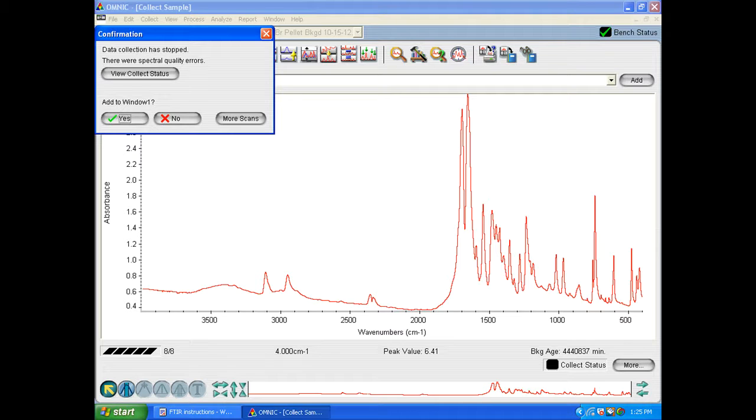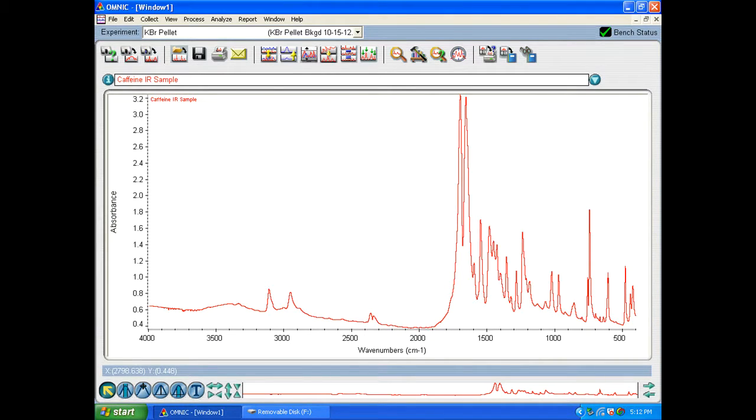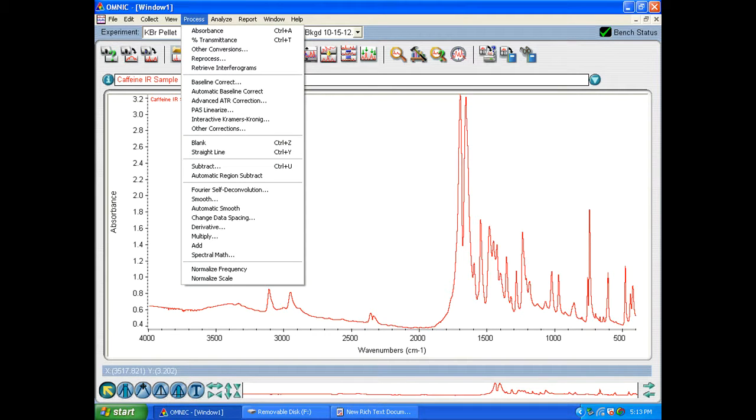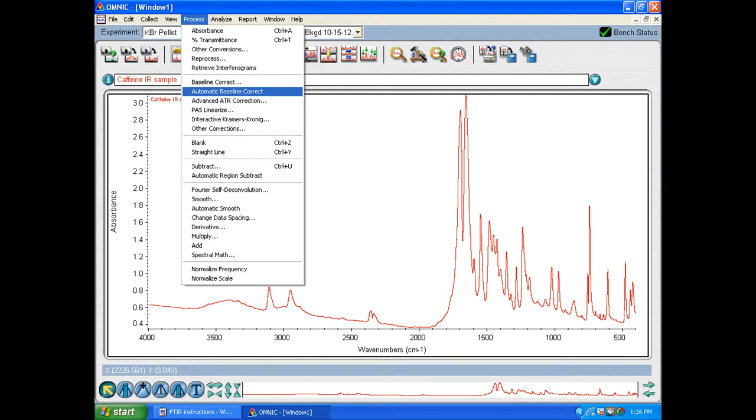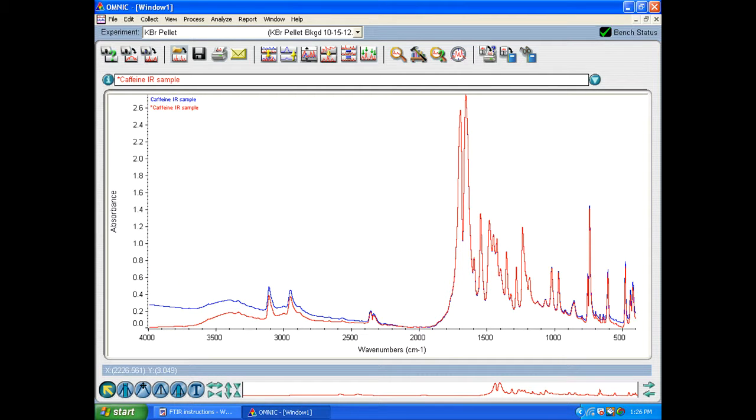Add to window one. You can hit yes. So now that we've done that what we need to do now is go up to process and go to automatic baseline correct and hit that. You'll now have two spectra on the window and it's the one that is highlighted in red and has a star up by the name. That is the new one that's the one we just did the automatic baseline correct to.